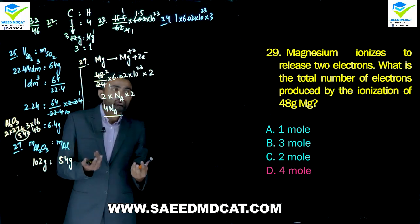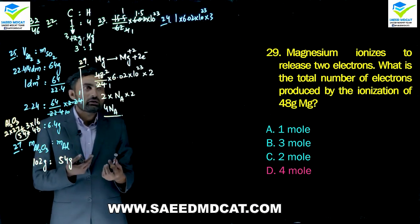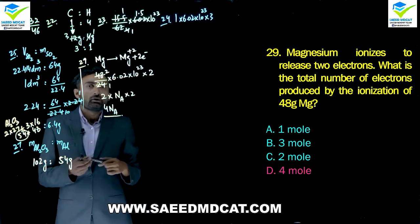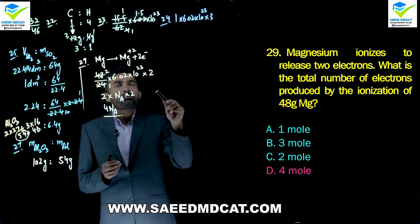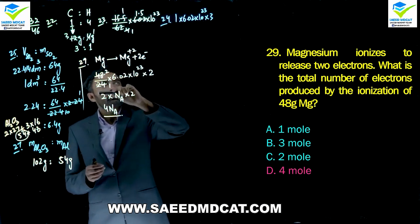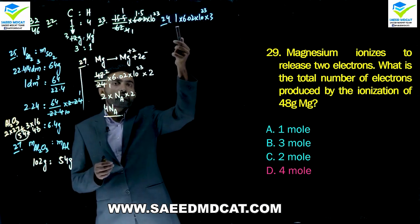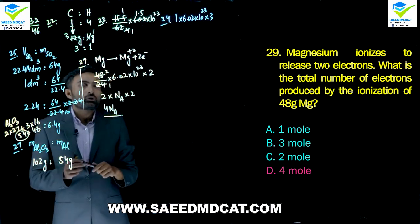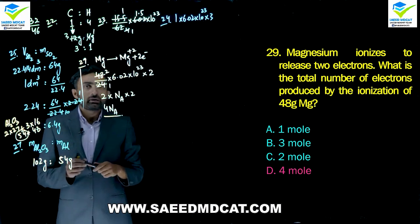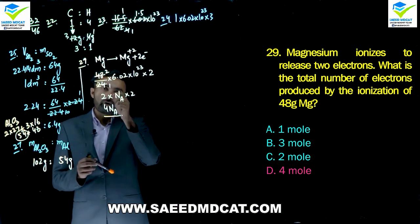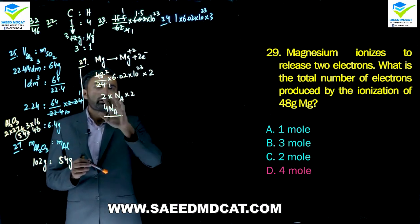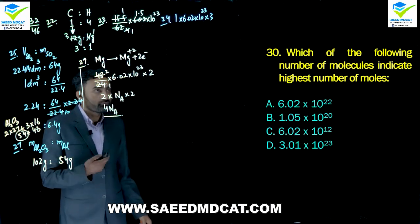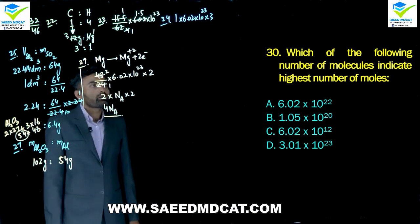General formula reminder: whenever you need total number of ions, atoms, or electrons, use: moles × Avogadro's number × (number of that species per formula unit). If answers are in moles rather than particles, just use the moles × species count directly.